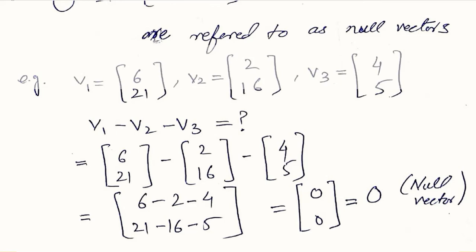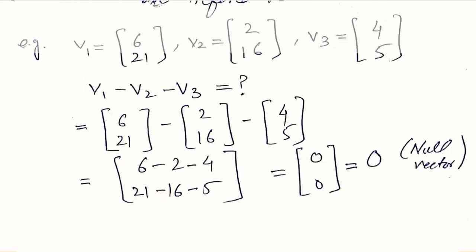Now we can perform another matrix operation: subtraction. Here we subtract three vectors — the first, second, and third. The condition for addition or subtraction of matrices or vectors is that they must have the same order. All three vectors here have order 2×1, so we can add or subtract them. Subtracting v1, v2, and v3, both the first and second members of the result are zero, giving a null vector.